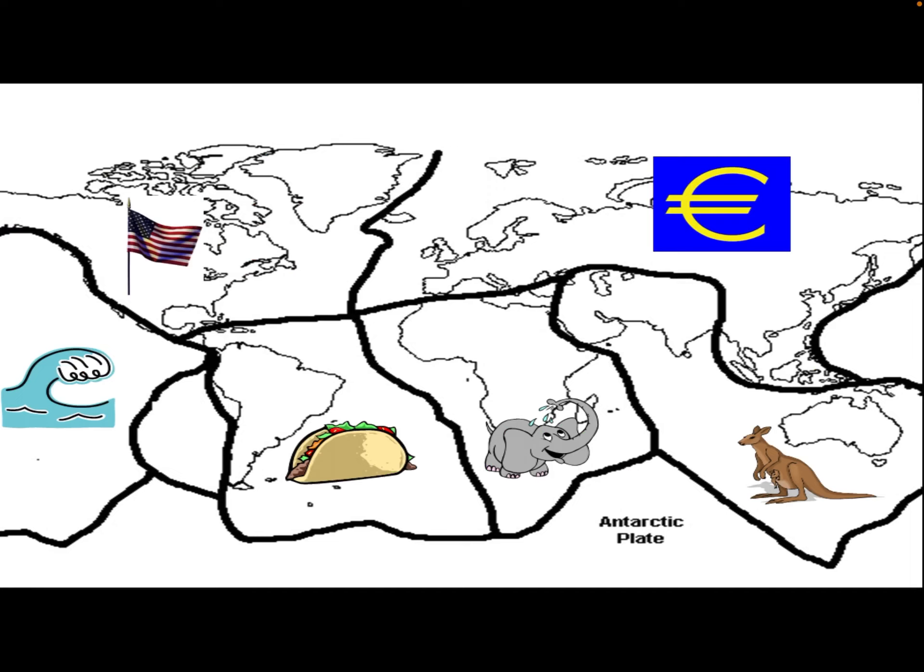We have an elephant — that will be an African elephant. When I think of elephants, I think of Africa. Same thing with Australia — when I think of Australia, I think of kangaroos, so that helps me remember that's the Australian plate. And that blue symbol with the yellow thing that looks like an E is the sign for the Euro. A lot of European countries use the same money called the Euro. So that helps me remember the Eurasian plate — Euro, Asian, Eurasian. Those are some things that help me remember. If you want to add pictures to your map, pick things that help you remember the name of that plate.